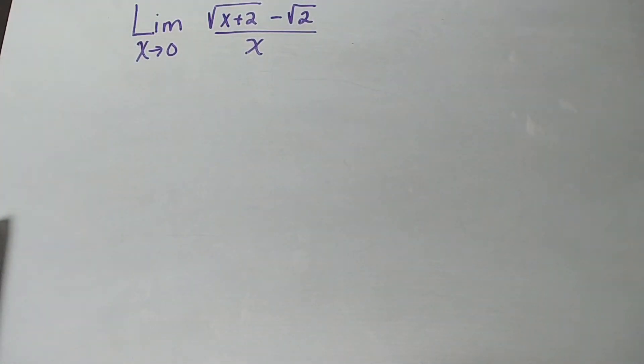Alright, so it says that we're evaluating the limit, or we're actually approximating the limit, as x approaches 0 of the square root of x plus 2 minus the square root of 2 all over x. So, it specifically says we have to use a table to estimate, which means something funky is going to happen here at x equals 0. So, I just want to see what's happening at x equals 0.